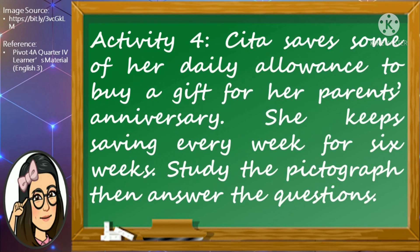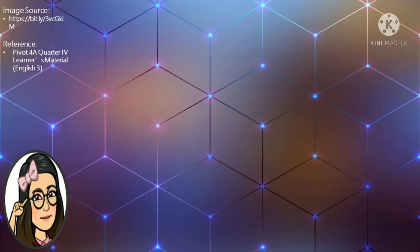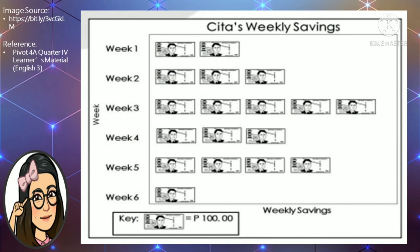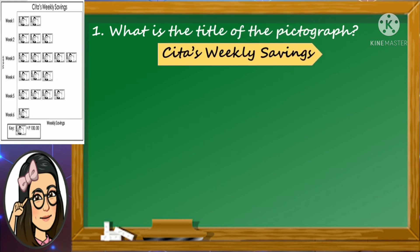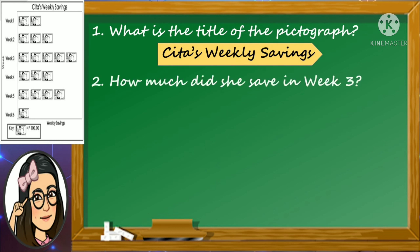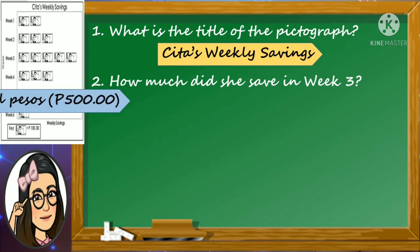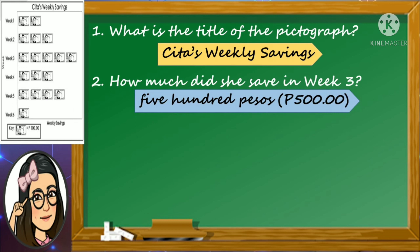Sita saves some of her daily allowance to buy a gift for her parents' anniversary. She keeps saving every week for six weeks. Study the pictograph, then answer the questions that follow. Here is the pictograph showing Sita's weekly savings. First question: what is the title of the pictograph? Excellent! The title of the pictograph is Sita's Weekly Savings. Number two: how much did she save in week three? Good job! Sita saved 500 pesos on week three.